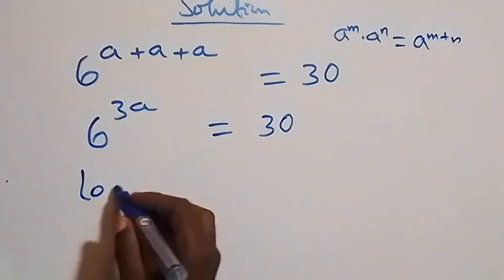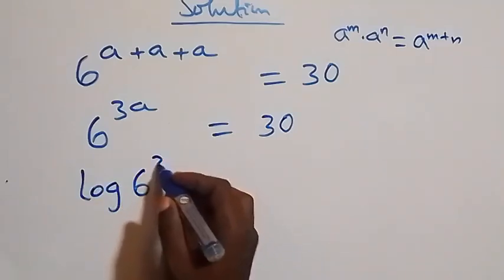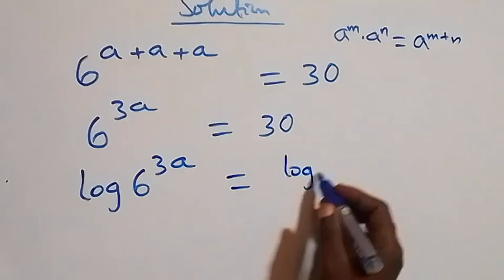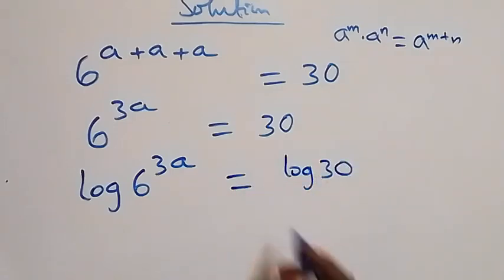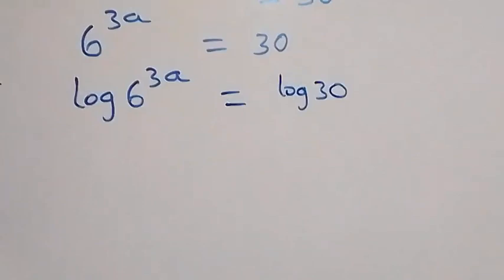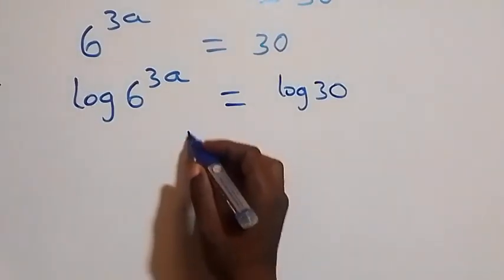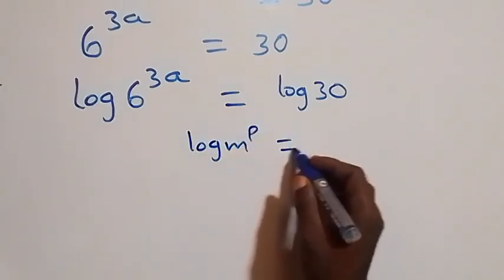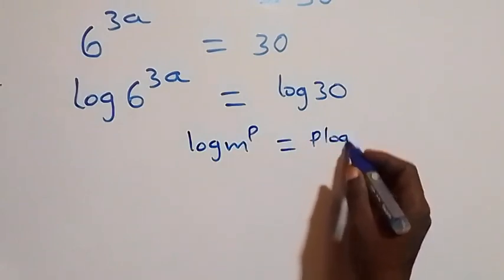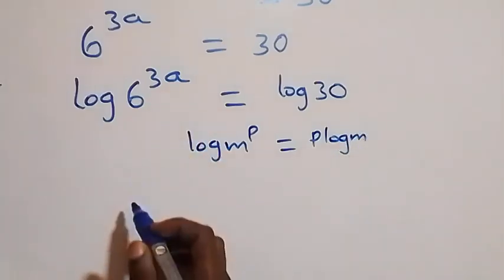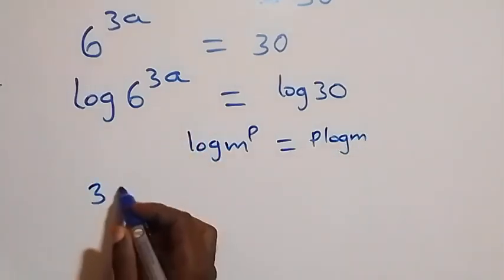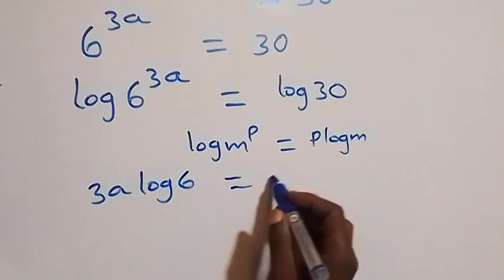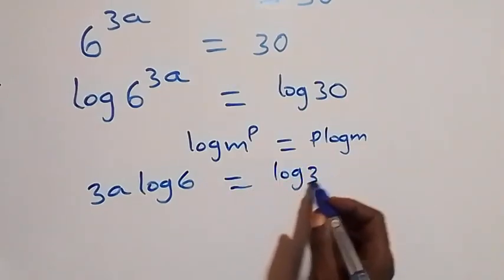The next step is to take the log on both sides, giving us log(6^(3a)) = log(30). Applying the power law of logarithms — log(m^p) = p·log(m) — the power 3a comes down, giving us 3a·log(6) = log(30).